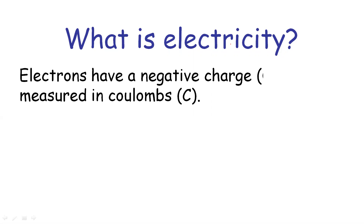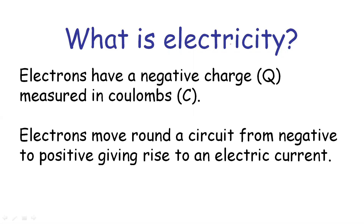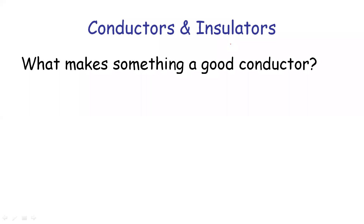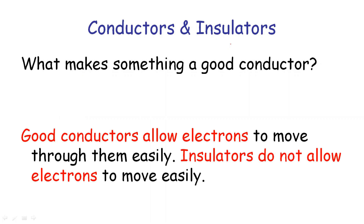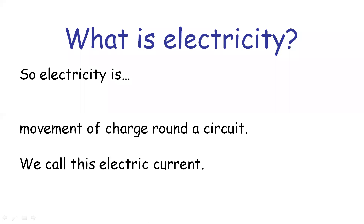Electricity is the movement of electrons. The movement of electrons in a circuit is called electric current. Electric current is based on materials — conductors and insulators. Current is the movement of electrons or charges in a circuit.